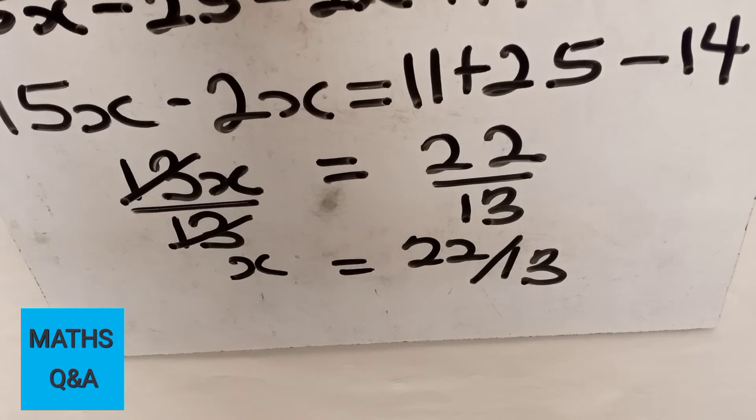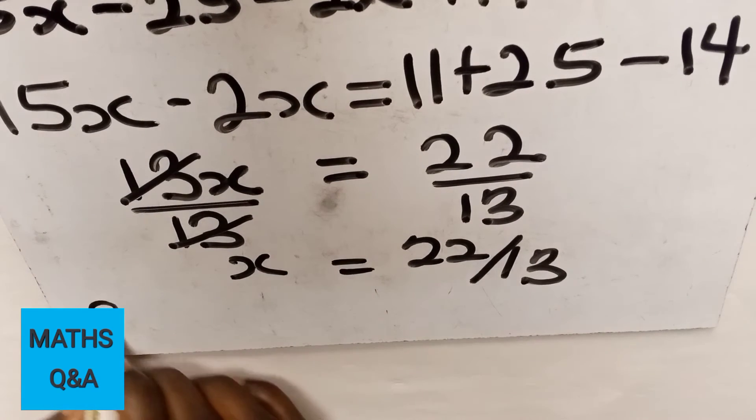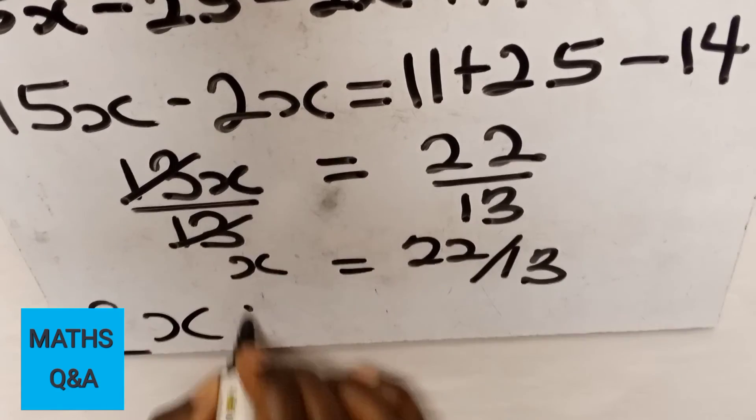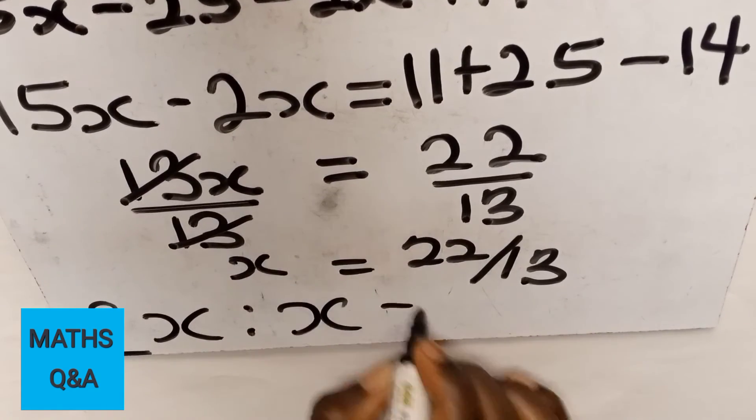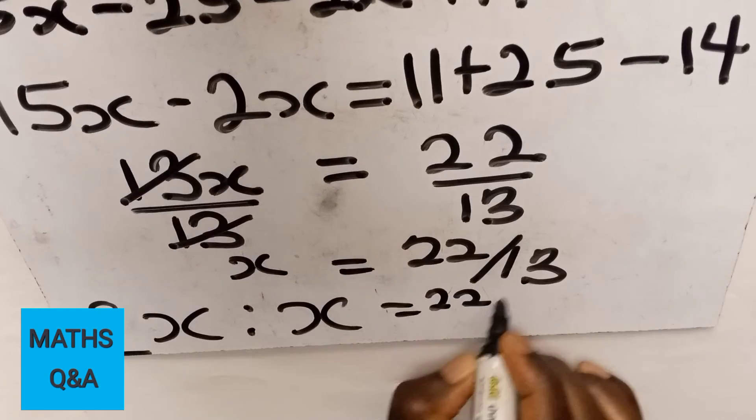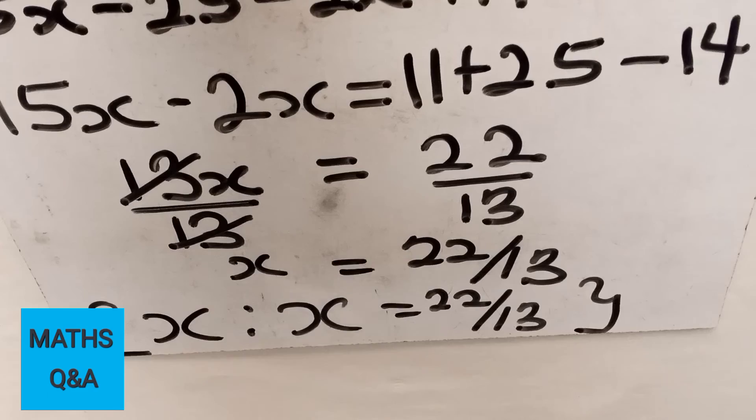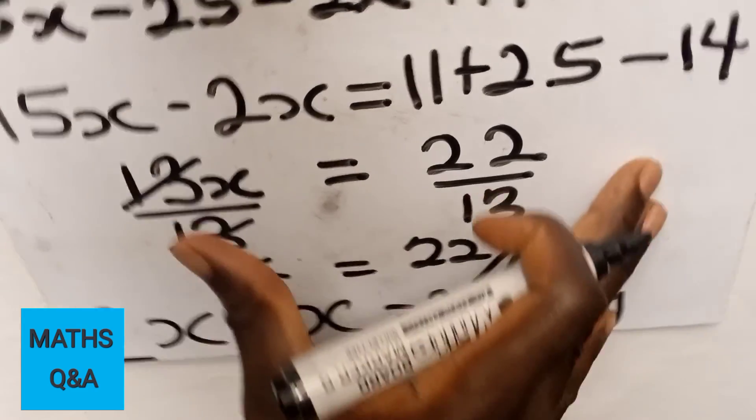In this case, since we have the answer for the equation to be x equal to 22 divided by 13, we write the truth set as {x: x = 22/13}. So this becomes the final answer for the question.